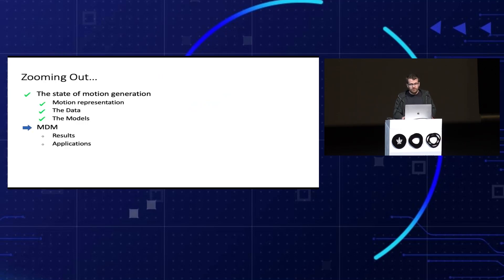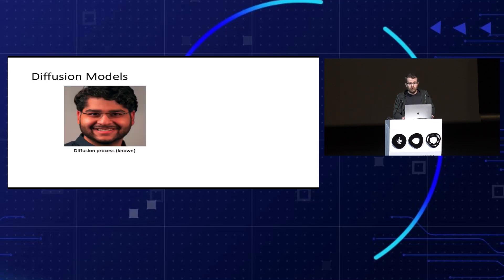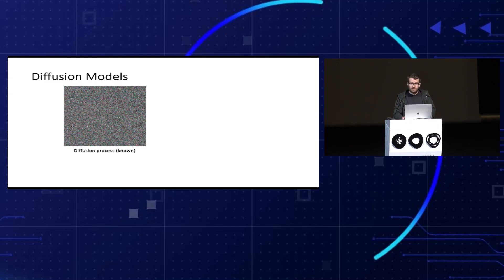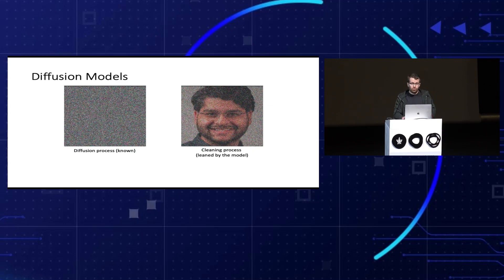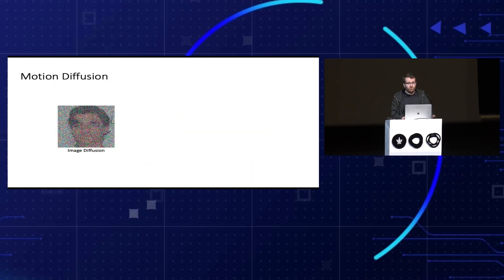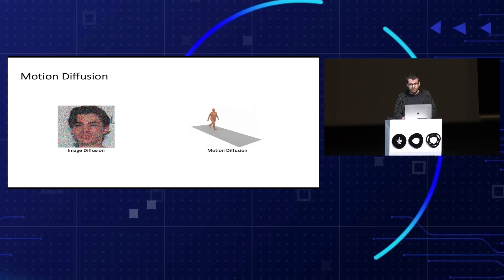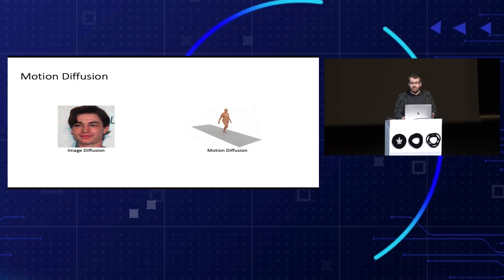Before I introduce MDM, let's recall the diffusion setting. In diffusion, we have the noising process, a stochastic process that noises a sample from the distribution up to pure noise. The model learns to denoise through small steps — capital T, about 1,000 steps. We know what noise looks like in the image domain, but how does it look in the motion domain, in the angle space? Motion is denoised from pure noise. We move forward in two axes: the denoising axis, and the time axis, since we deal with temporal data.